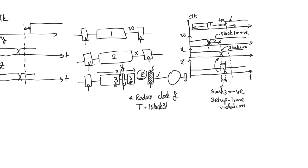To reiterate: for all paths, when we calculate propagation delay, we have to calculate the worst-case propagation delay. When finding slacks and setup time violations, we always use the worst-case delays for each path. We look for the worst combination of logic gates within the path and the worst inputs that activate the largest amount of resistance in the combinational path — that is the value of delay we use.